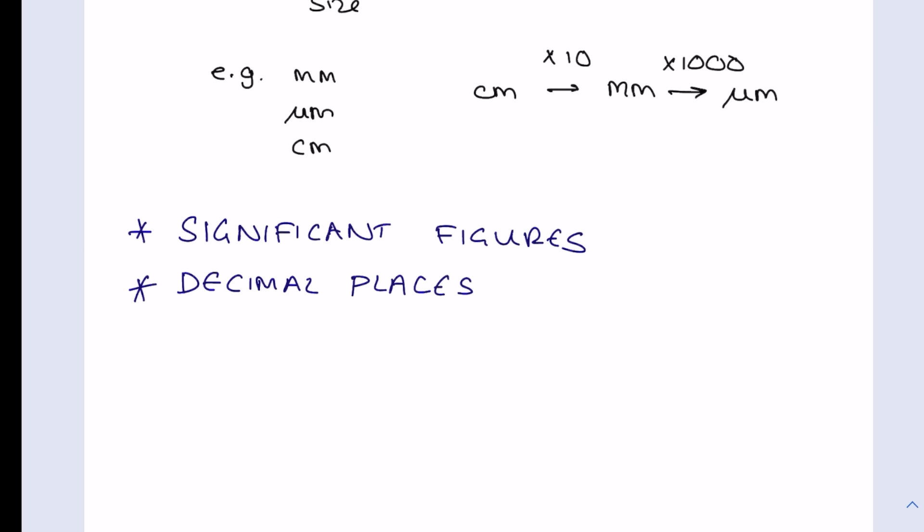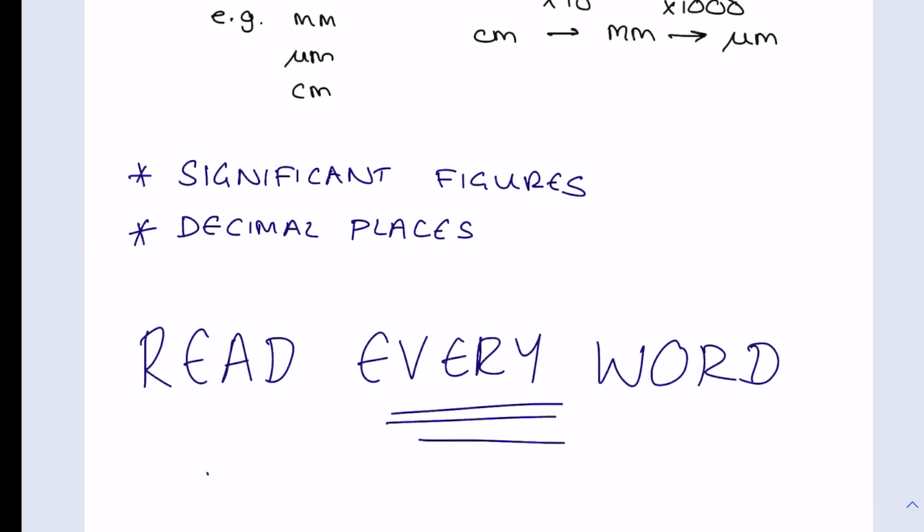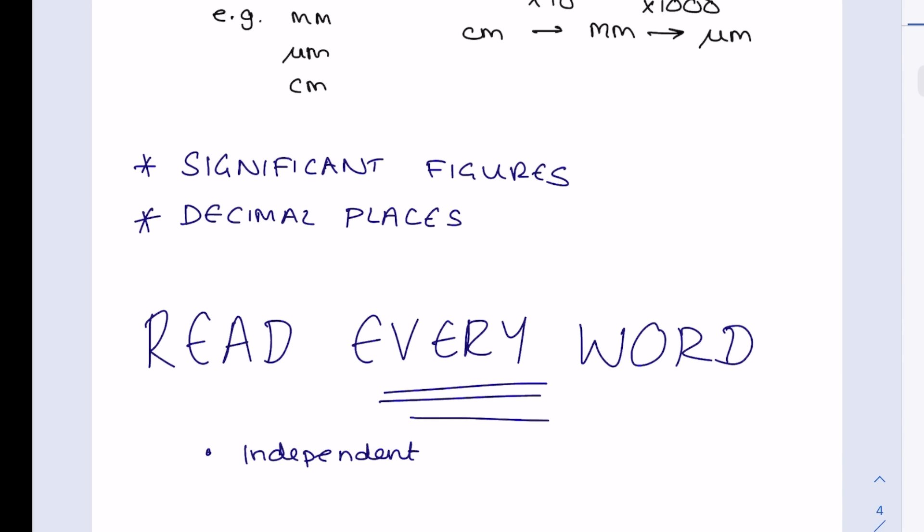With the first question, the really long practical, read every word. You cannot hope in the CIE paper to just jump in at the question because you won't have a clue what's going on. My biggest advice is read every word to try and understand what they're investigating, what the independent variable is, what the dependent variable is, and by doing that you'll have such a good idea of what they were looking for and it'll make it so much easier.